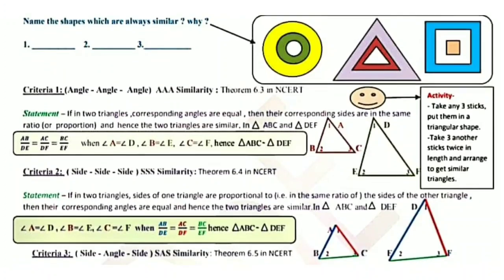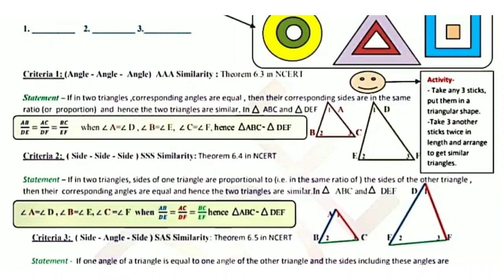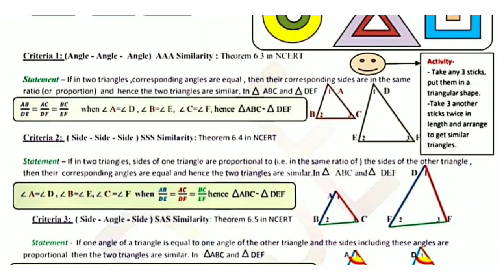In triangle ABC and DEF, angle A equals angle D and angle B equals angle E and angle C equals angle F when the corresponding sides are in proportion: AB upon DE equals BC upon EF equals AC upon DF. When this ratio is equal, we say triangle ABC is similar to triangle DEF. Now criteria number three: Side-Angle-Side — you have two sides that must be in proportion and the included angle must be equal, then the two triangles will be similar by SAS similarity criteria.